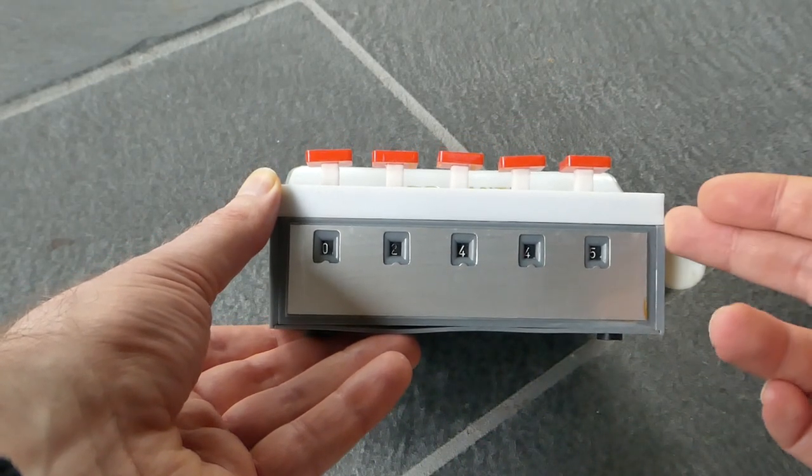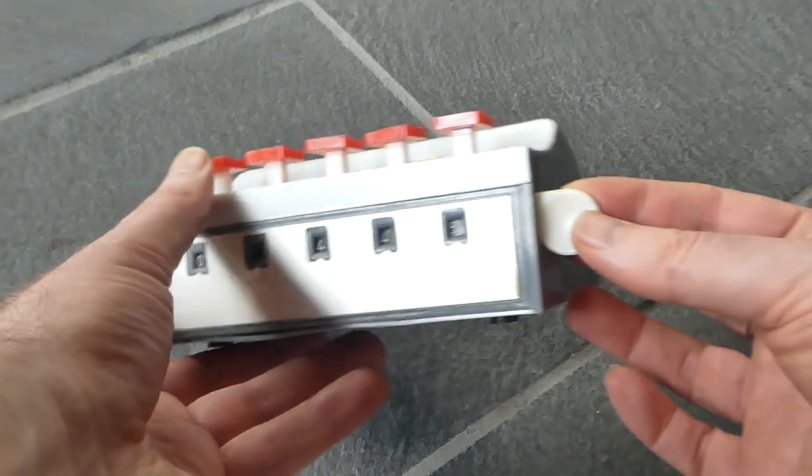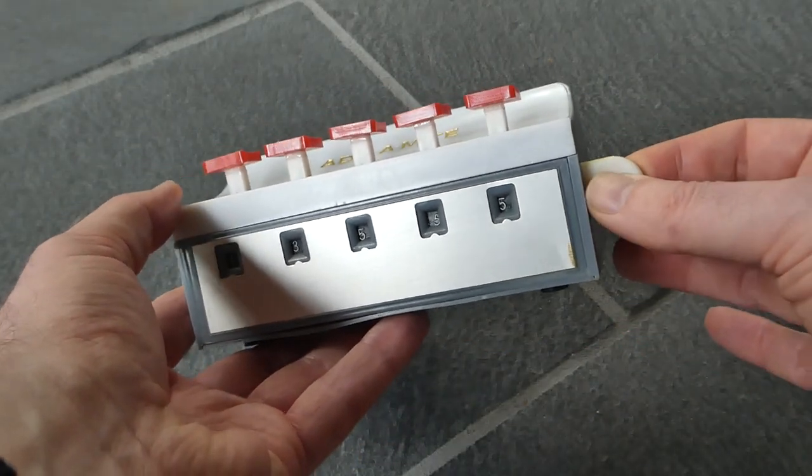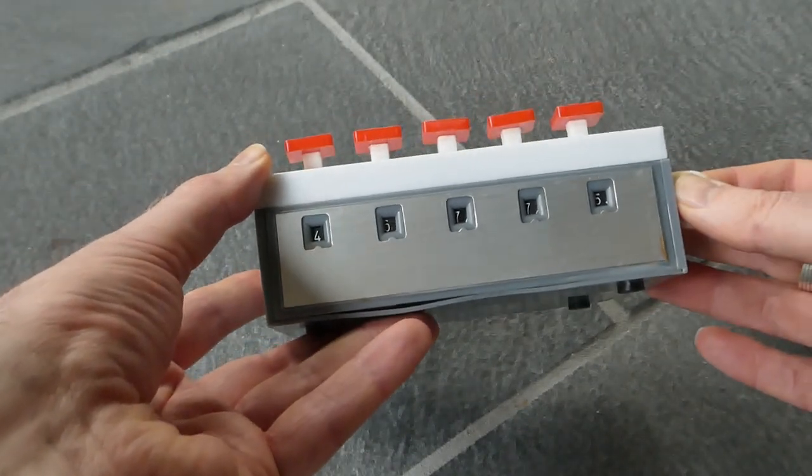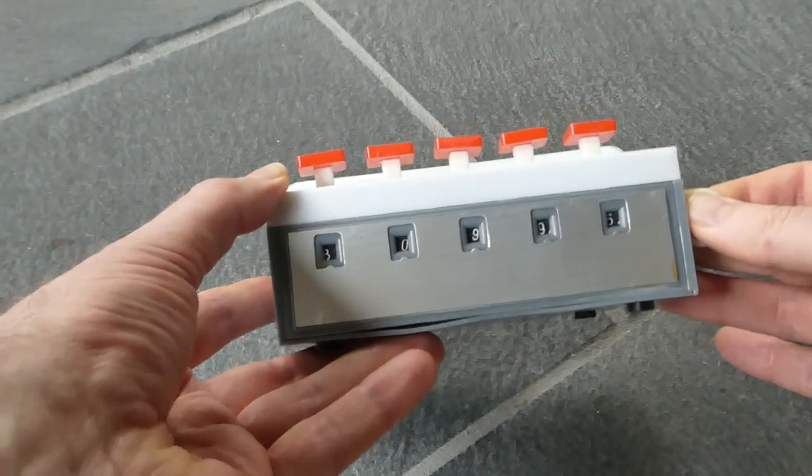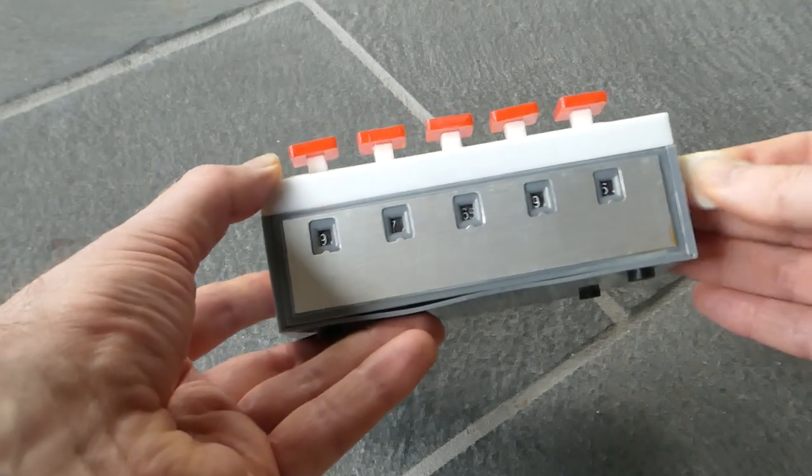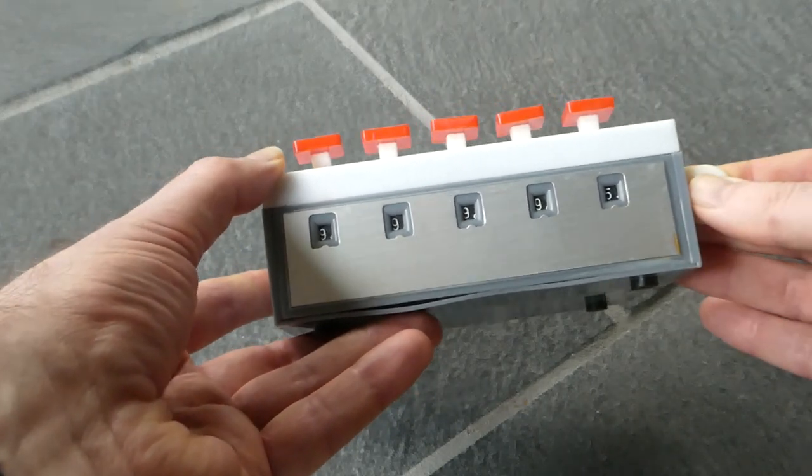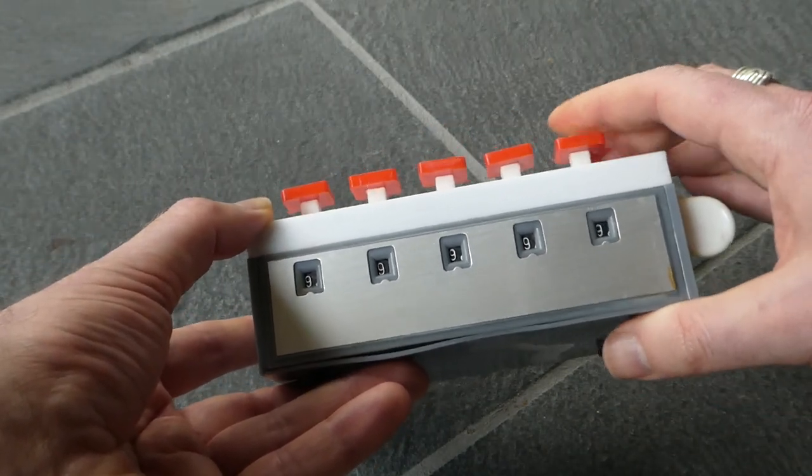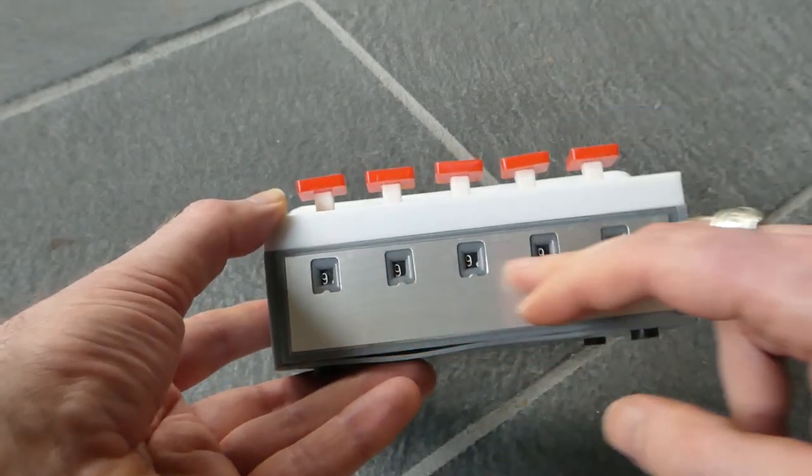Unfortunately what doesn't always work on this one is the clearing mechanism. To clear the register you have to pull this out and push it back in. And it should bring all the digits up to nine. But it doesn't quite do what it should do. There we go. But this one isn't nine. Anyway, if they're all up to nine then you press the first button and it should overflow to zero.